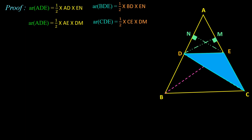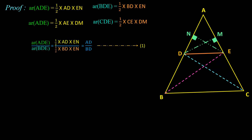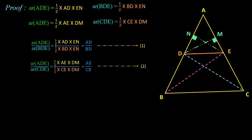Now I form the ratios. Area of triangle ADE / area of triangle BDE = (½ × AD × EN) / (½ × BD × EN). Cancelling common terms, we get AD/BD. Call this Equation 1. Next, area of triangle ADE / area of triangle CDE = (½ × AE × DM) / (½ × CE × DM). Cancelling common terms, we get AE/CE. Call this Equation 2.